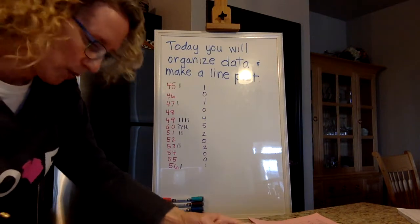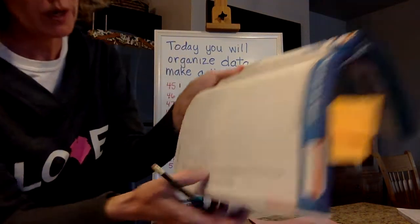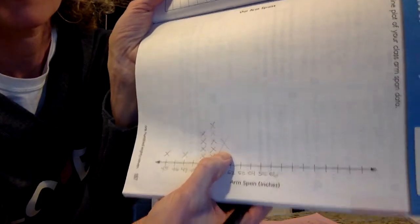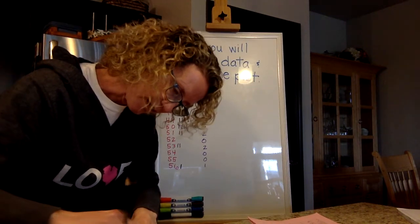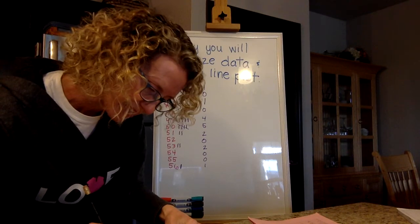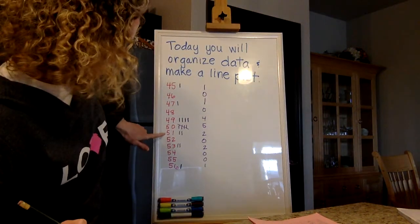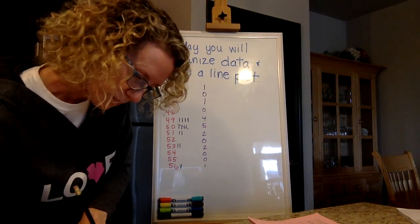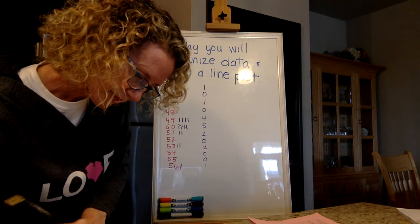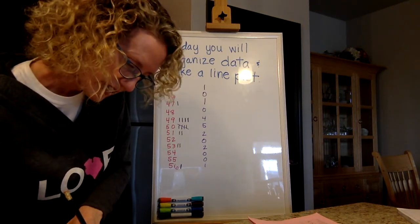And then for 51, I have 2. What's wrong with that X? Right. It's way too big. And it kind of makes my line plot go off. And remember, a line plot is just another kind of graph. Do you see how this is kind of coming together like a graph? And then 52 has 0. 53, how many Xs? Right, 2. And 54 is 0. 55 is 0. 56 is 1.